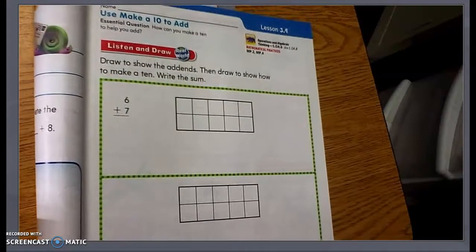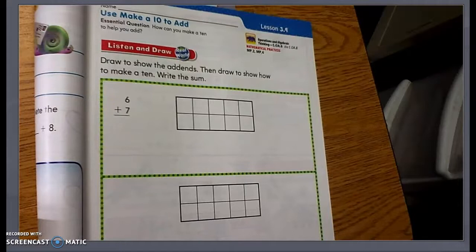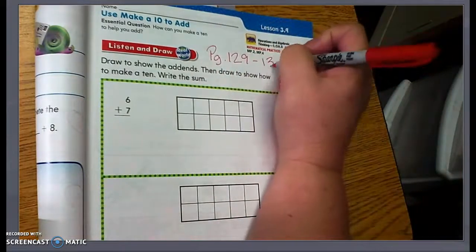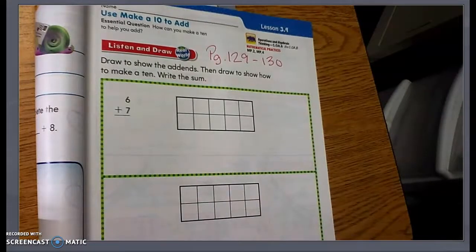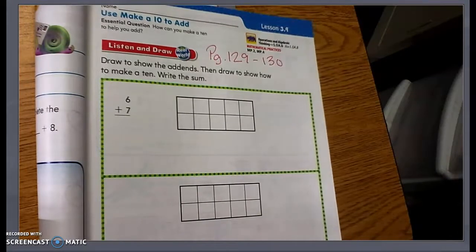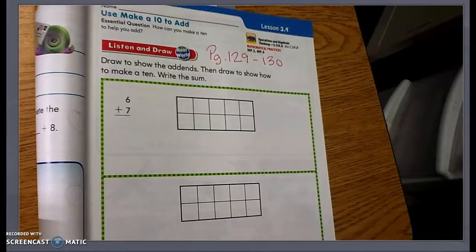Hello, boys and girls. I want to go over Lesson 3.9 with you, and this is today's lesson, which is Monday, October 19th. We are going to be on page 129 and go all the way to 130, and we will stop there because you will be bringing this book back with you, and we will finish page 131 and 132 in class.